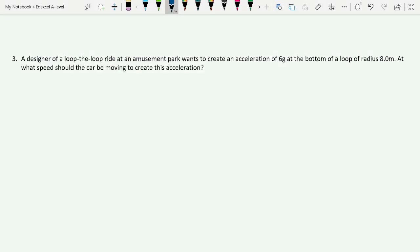Final question 3. A designer of a loop-the-loop ride wants to create an acceleration of 6g at the bottom of a loop of radius 8 meters. At what speed should the car be moving to create this acceleration? Okay, we need that g, that acceleration, in numbers rather than 6g. So let's do that first. 6 times 9.81 giving us an acceleration of 58.86 meters per second squared.